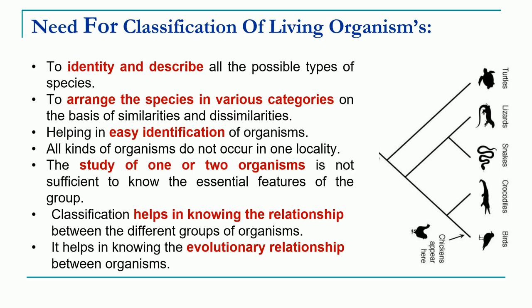All kinds of organisms do not occur in the same locality, so it becomes imperative to have a proper classification system. The study of one or two organisms is not sufficient to know the essential features of a particular group. Classification helps in knowing the relationships. There are different types of relationships two organisms can share, and classification systems help in understanding such relationships between different groups. Very importantly, it helps us know the evolutionary relationship between different organisms.